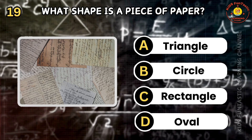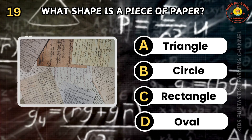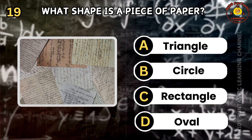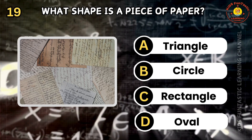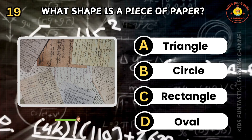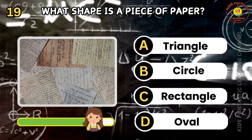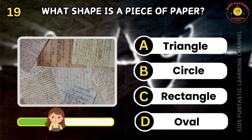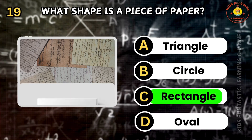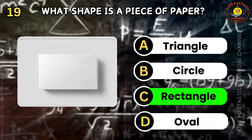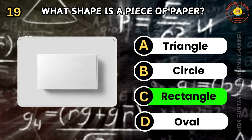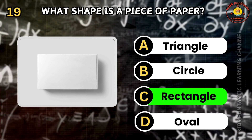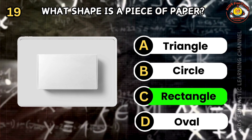Question 19. What shape is a piece of paper? A: triangle, B: circle, C: rectangle, D: oval. Great job! The correct answer is C. A piece of paper is usually rectangular.